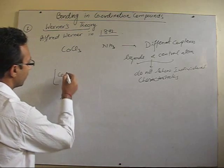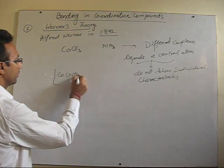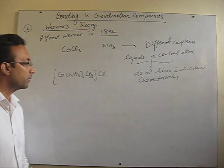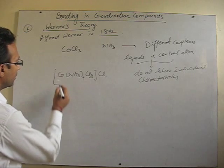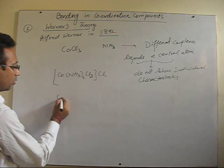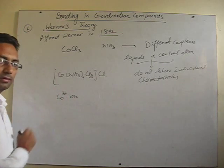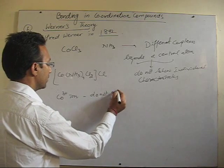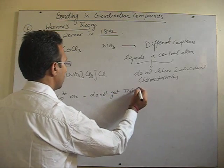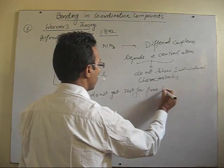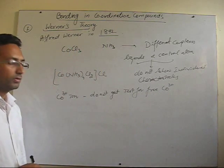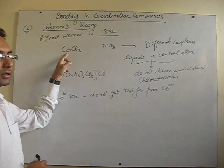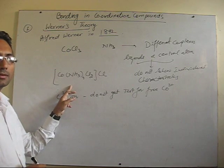For example, in this particular complex, the complex contains cobalt-3 ion, but we do not get a test for free cobalt ion. That means this part is unionisable. Though cobalt is there, the individual characteristics of the metal — that is, cobalt — are not shown by this complex.